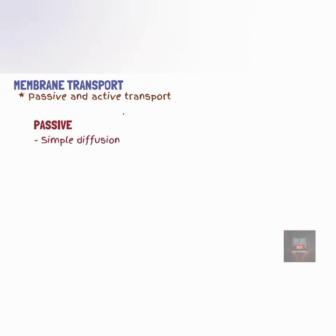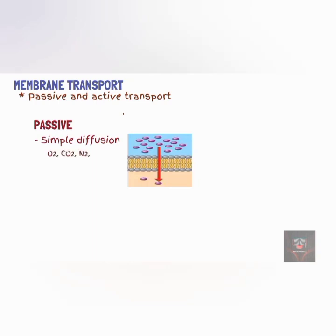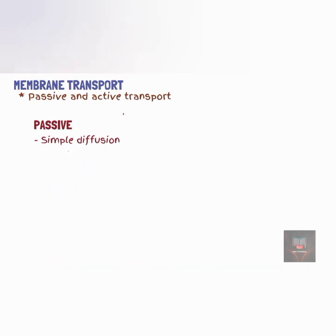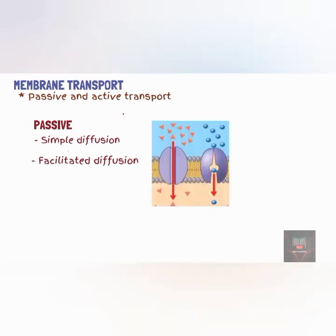An example of a passive transport process is simple diffusion. Simple diffusion is a passive process in which substances move freely through the lipid bilayer of the cell without the help of membrane transport proteins. Examples of molecules that travel using simple diffusion include oxygen, carbon dioxide, nitrogen gas, fatty acids, steroids, fat-soluble vitamins, and small uncharged molecules such as water and urea. Another example of passive transport is facilitated diffusion, which occurs when an integral membrane protein assists in the transportation of a substance across the membrane along its concentration gradient.